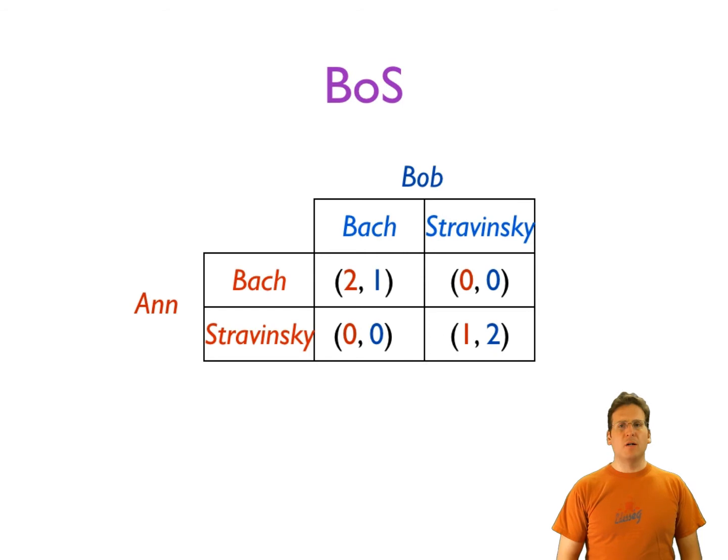Real-world games can be very complicated, so in game theory we often learn about toy games. Toy games are very simple games that describe a certain kind of strategic situation. Let's look at a few toy games. The first one is called Bach or Stravinsky.